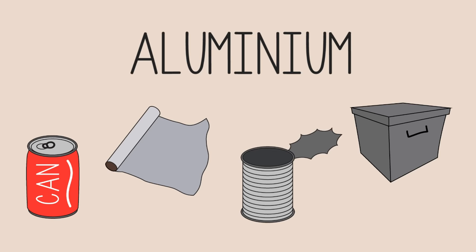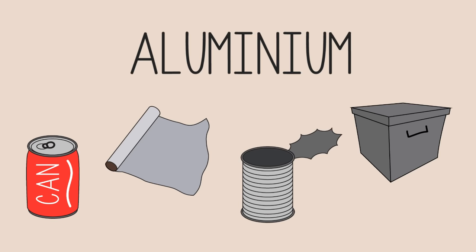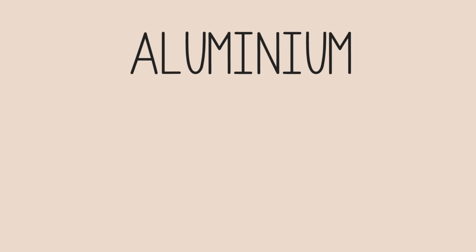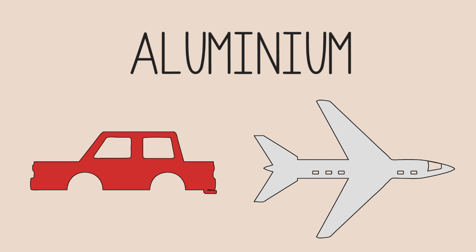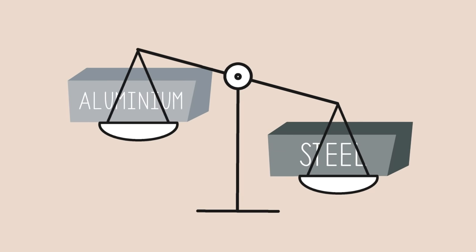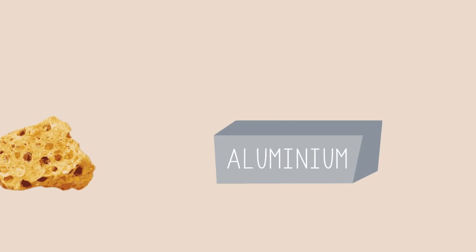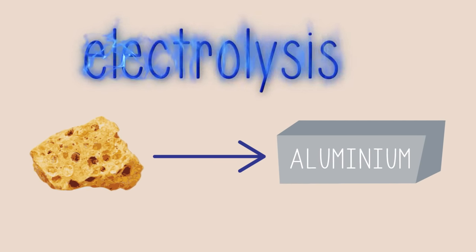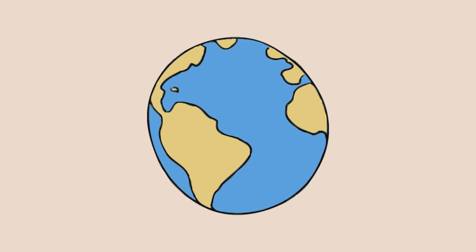Aluminum is used to make soft drink cans, aluminum foil, certain food cans, and even certain packaging materials. Aluminum is also used to make the outer bodies of some cars and airplanes, due to the fact that it is less dense than steel. The extraction of aluminum from its ore is done by electrolysis. It may not seem like a lot of electrical energy is needed, but keep in mind that this is done on an industrial scale worldwide.